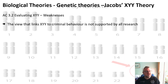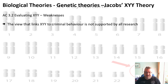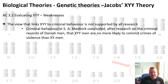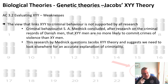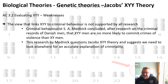However, looking at the weaknesses, not all research supports the link between XYY and criminal behaviour. Mednik, after researching criminal records of Danish men, concluded that XYY men are no more likely to commit crimes of violence than XY men — he couldn't find a correlation. This questions Jacobs's XYY theory and suggests we need to look elsewhere for an accurate explanation of criminality.